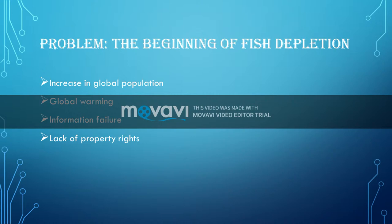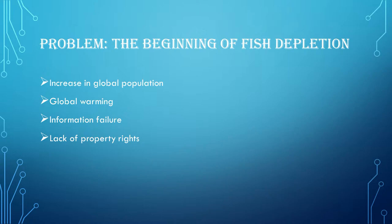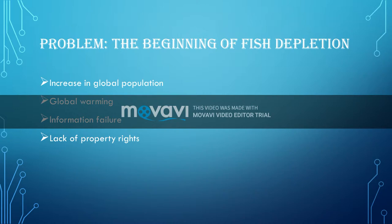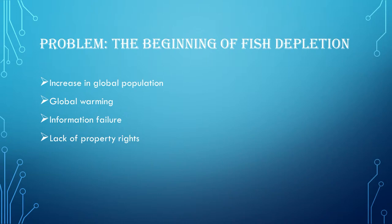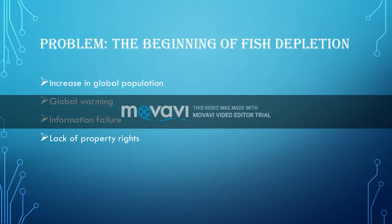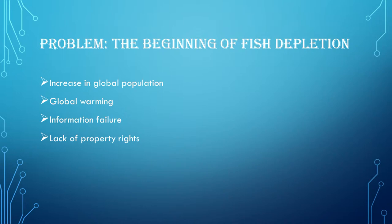Overfishing became a problem for both developing and developed countries. Global warming is also another factor — the increase in temperature has affected the ocean. As we all know, the ocean is the habitat of fish, and when that habitat is interrupted, fewer fish will be available. A failure of information about marine organisms also meant that fishermen did not know the size of available fish stocks in the ocean, which in turn led to overfishing.